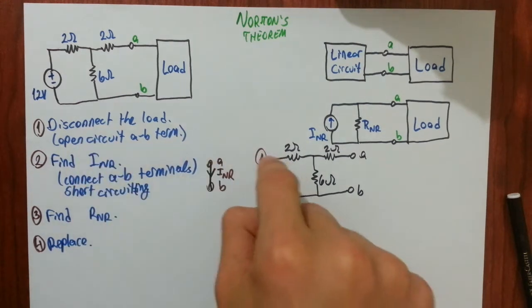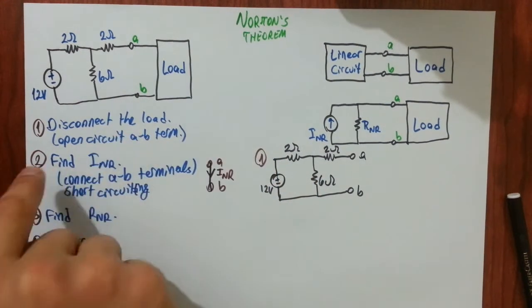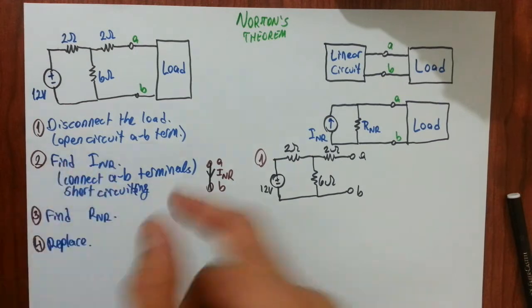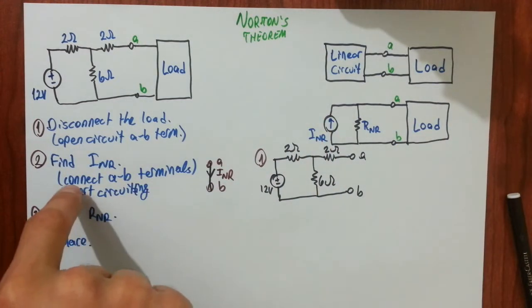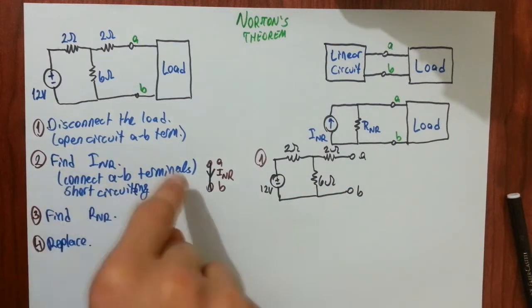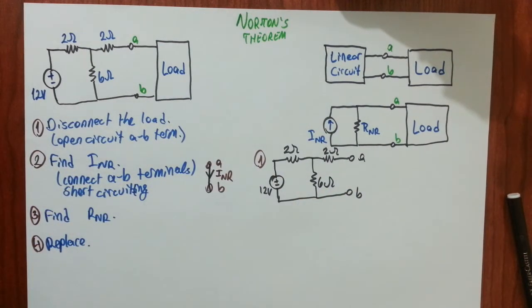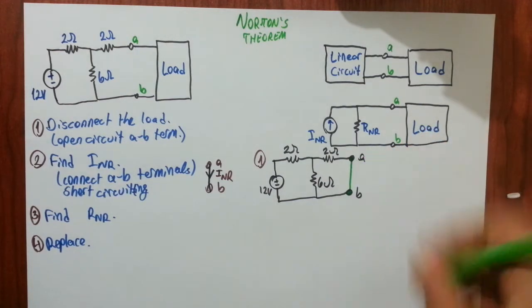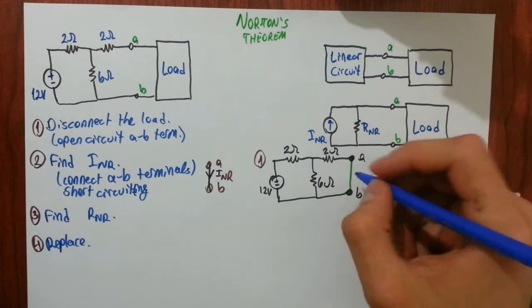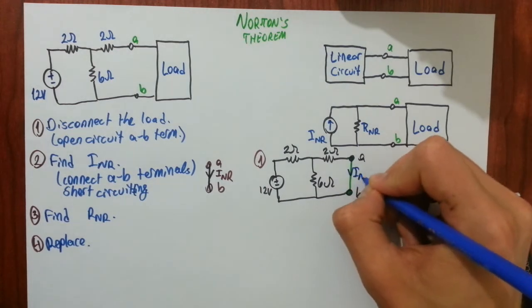We have completed step one. Now step two is to find INR, Norton equivalent current. And how you will find it? You will connect A and B terminals. In other words, you will short circuit A and B terminals. Let me short circuit them. I have connected wire like this. And I will find this current. INR.